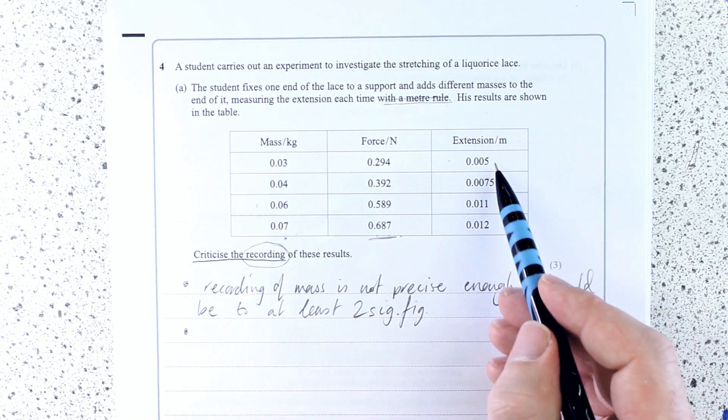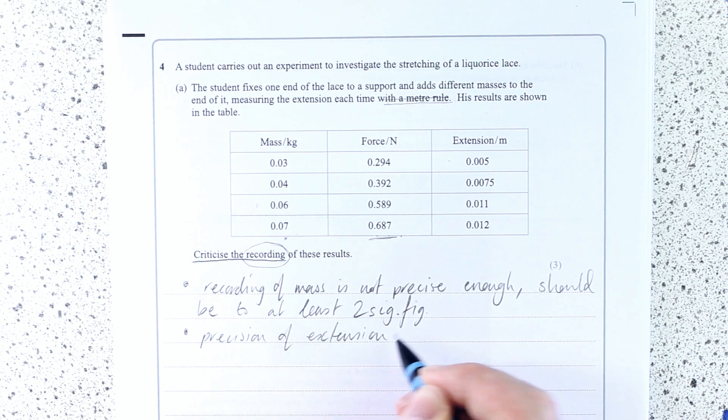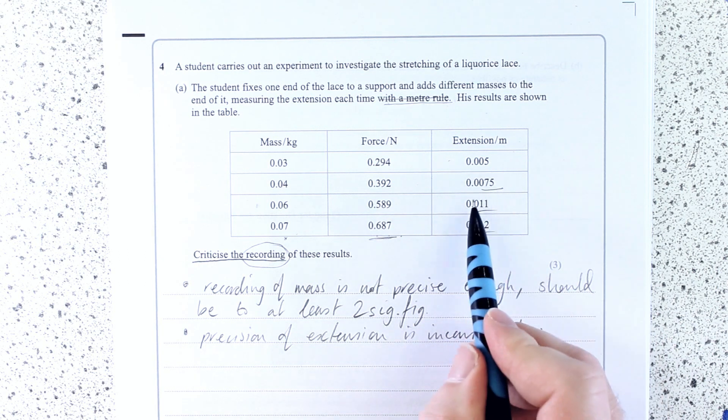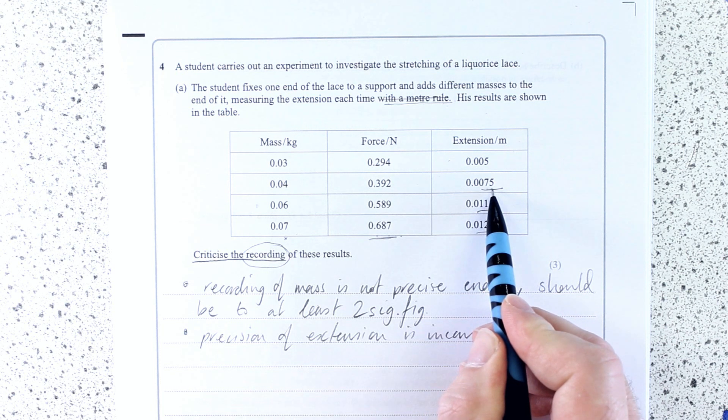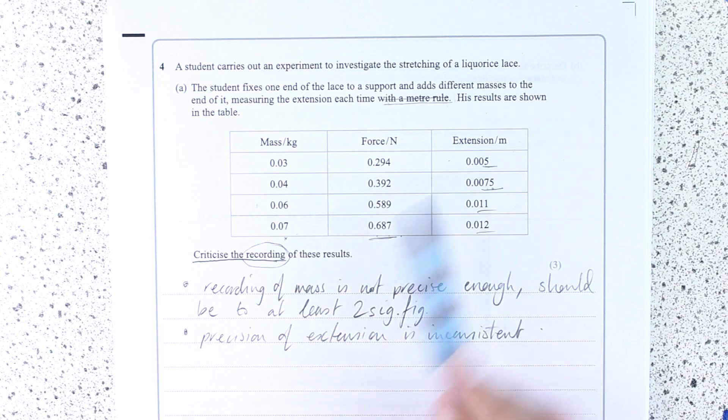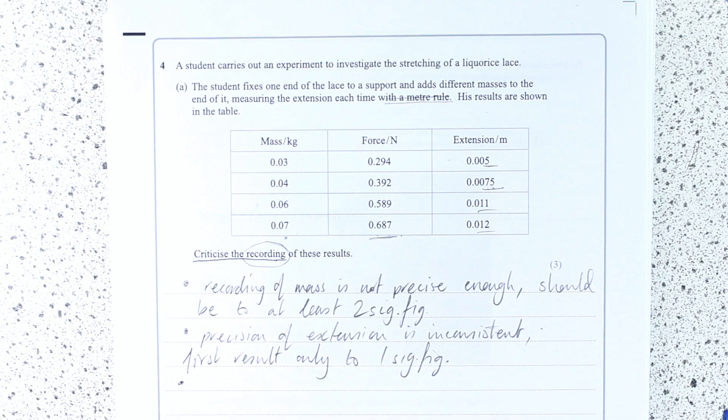So the next one is the significant figures over here. The precision of extension is inconsistent. That's enough for the mark there. What do I mean by that? Well, this is to two sig figs, two sig figs, two sig figs. This is okay, even though with a meter ruler, we wouldn't really try and measure to half a millimeter. But again, it's not about the method. It's about the actual recording. This is only to one sig fig. So the extension is inconsistent, the precision. I might write first result only to one sig fig, just to make it really clear what I'm talking about to the examiner.